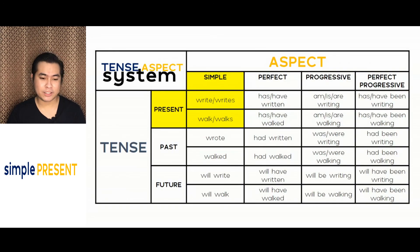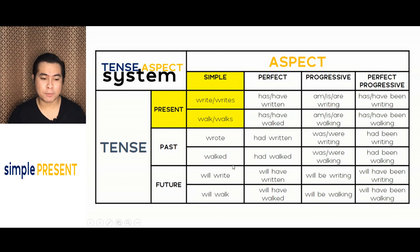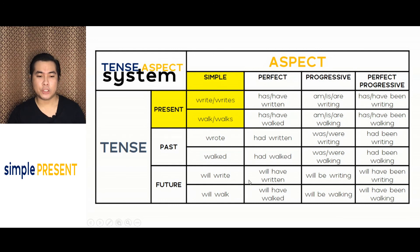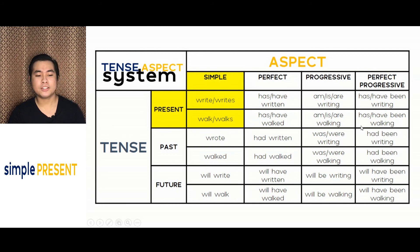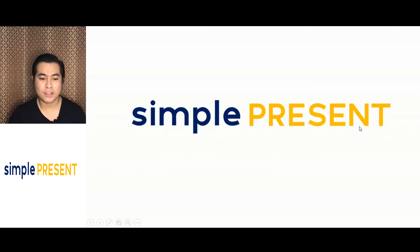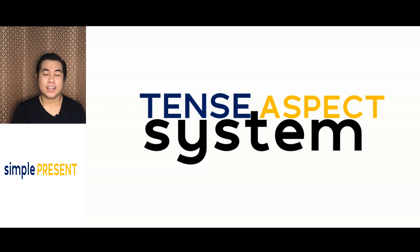So again, that's your simple present. In the next videos, we will talk about simple past, simple future, present perfect, past perfect, future perfect, present progressive, past progressive, future progressive, present perfect progressive, past perfect progressive, and future perfect progressive. So that's your simple present under your tense aspect system.